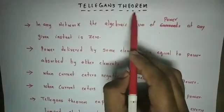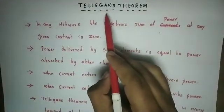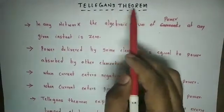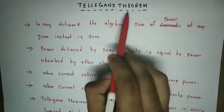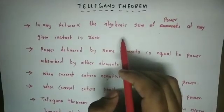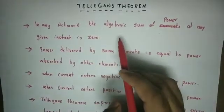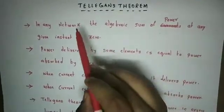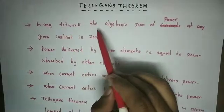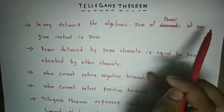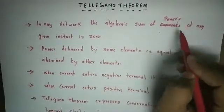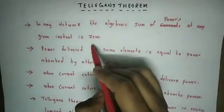Now we are going to discuss Tellegen's theorem. The first point: in any network, the algebraic sum of powers at any given instant is zero — just like the algebraic sum of currents.